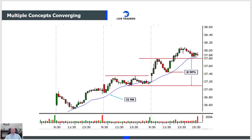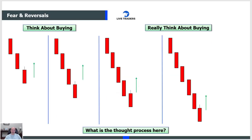Multiple concepts converging in an area. We move up, we pull back, we move up, we pull back. Now we already saw the moving average. What do we also have? We see this pullback — one, two, three, four, five bars. What did I say about five bars? Expect a bounce. Look at that. Think about buying. Let's go back to the chart — five bars down.